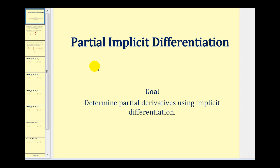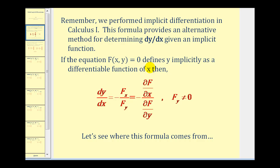Welcome to a video on partial implicit differentiation. In the previous video we learned that if we have an implicit equation, we can rewrite it in the form f(x, y) = 0 and determine dy/dx using partial derivatives. We showed where that formula comes from, and now we can expand this to help us determine partial derivatives of functions in terms of two variables.